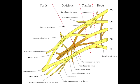This injury leads to the positioning of the hand that looks like the waiter's tip. What are the classic clinical presentations seen in Erb-Duchenne Palsy? The classic clinical presentation of Erb-Duchenne Palsy is a neonate with arm paralysis following a difficult birth.